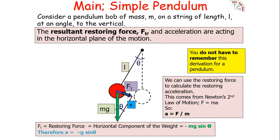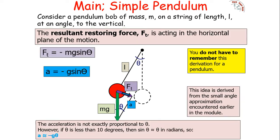So if F equals minus mg sine theta and a equals F over m, then a equals minus mg sine theta over m, which simplifies to a equals minus g sine theta. So the resulting force F is equal to minus mg sine theta and the acceleration is minus g sine theta.